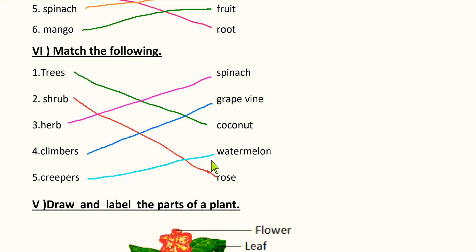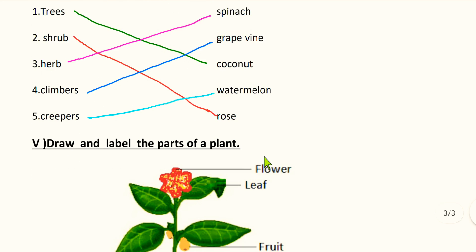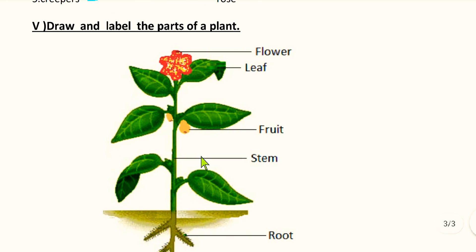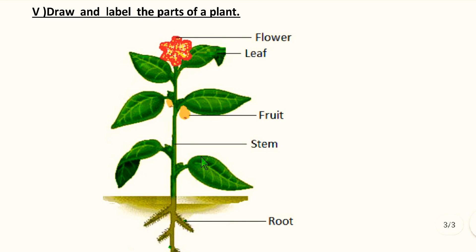Now we have come to the last bit: draw and label the parts of a plant. You have to draw a plant and label its parts. That's all for today, children. Thank you. Have a good day.